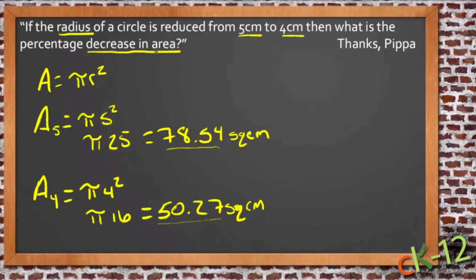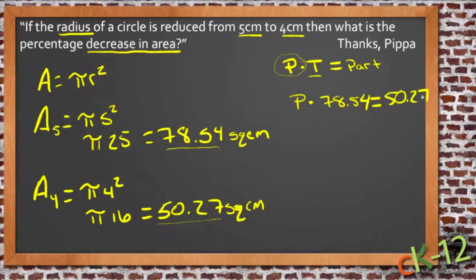But if we want to know what the percentage decrease in area is, we need to plug those numbers into our formula for percent of change. And that is the percent times the total equals the part. So we're looking for the percent, we have our total, which is our big number, the number that we started with. That's going to be 78.54. So the percent that we're looking for times 78.54 will equal the part that we have, the 50.27.